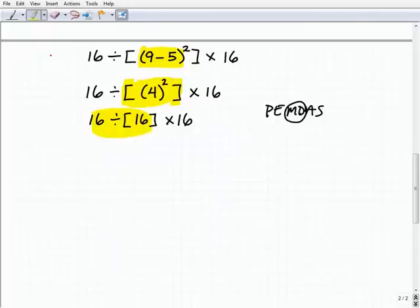So this is going to be division first. This is what I see from left to right. So I got 16 divided by 16, which is 1, 1 times 16 is 16.